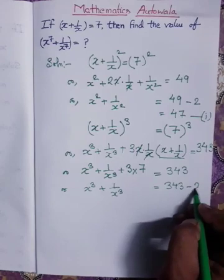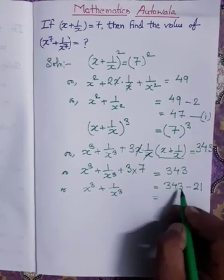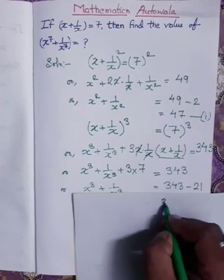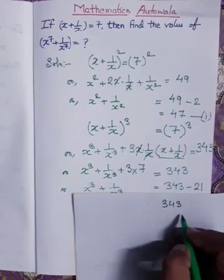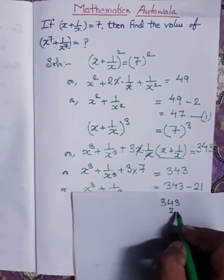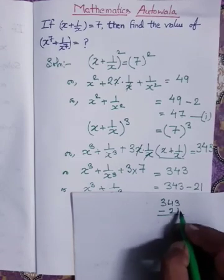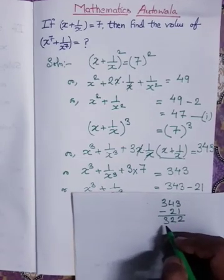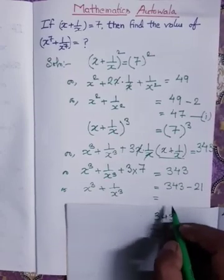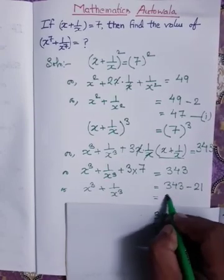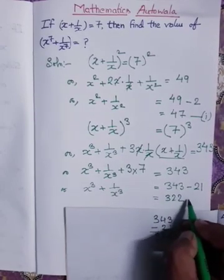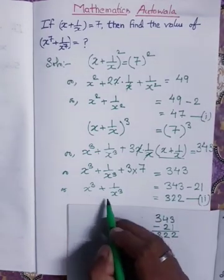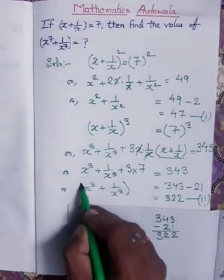So x cube plus 1 by x cube is equal to 343. Here 3 times x times 1 by x gives 3, and x plus 1 by x is 7, so 3 times 7 is 21. This plus 21 comes to this side as minus 21. So 343 minus 21 equals 322. We got x cube plus 1 by x cube equals 322. This is my second equation.